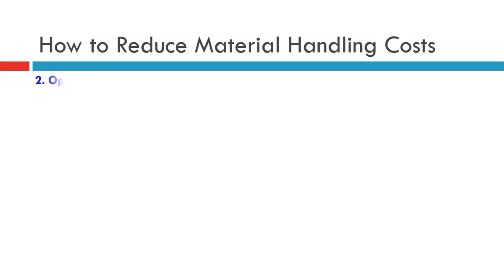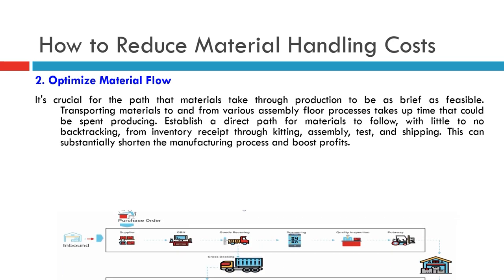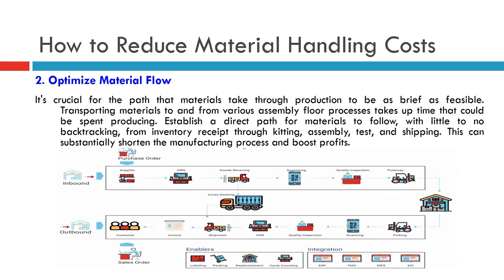Cost reduction strategy 2 — Optimize material flow: It's crucial for the path that materials take through production to be as brief as feasible. Transporting materials to and from various assembly floor processes takes up time that could be spent producing. Establish a direct path for materials to follow, with little to no backtracking, from inventory receipt through kitting, assembly, test, and shipping. This can substantially shorten the manufacturing process and boost profits.